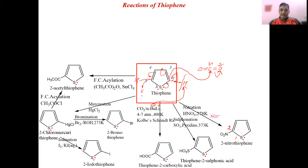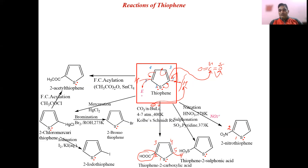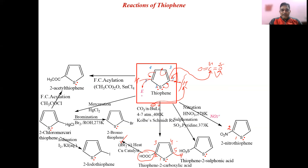Now, can thiophene-2-carboxylic acid be converted to 2-bromothiophene? Yes. First, perform bromination — since C5 still has H, bromination replaces that H with Br. Then heat with a catalyst (like copper catalyst) to perform decarboxylation in the second step. This gives 2-bromothiophene. The sulfur in thiophene acts as an electron-withdrawing group (like CH group in malonaldehyde), facilitating decarboxylation, though a catalyst is needed to accelerate the rate.